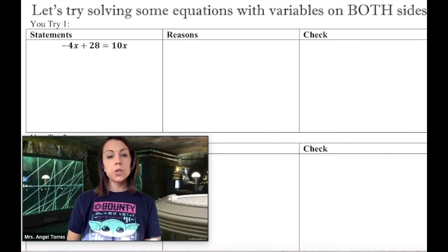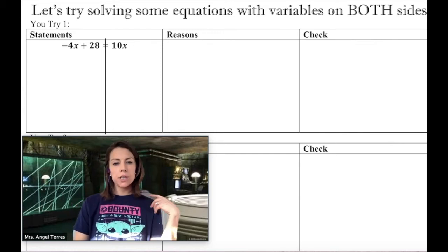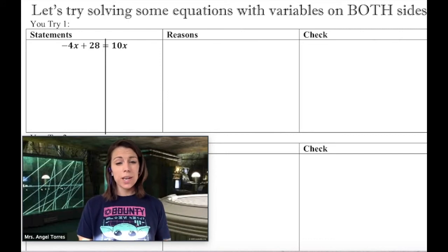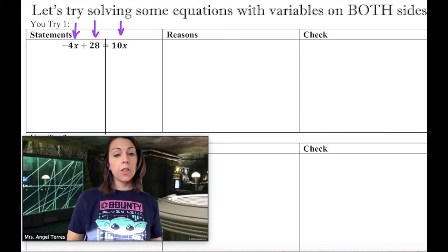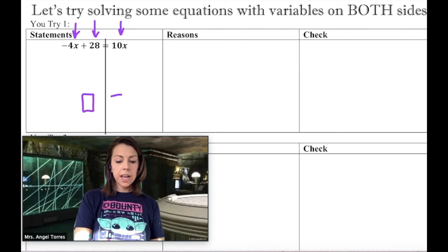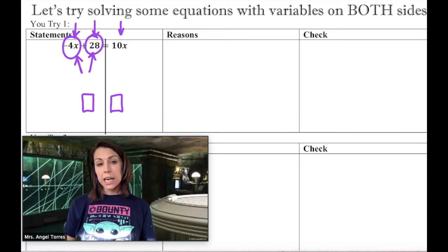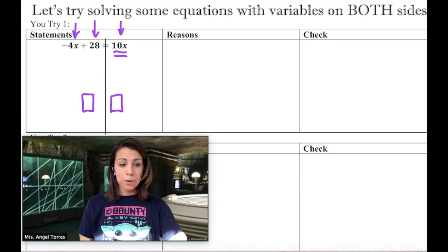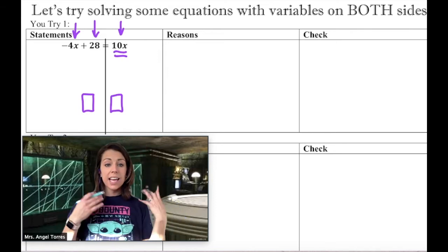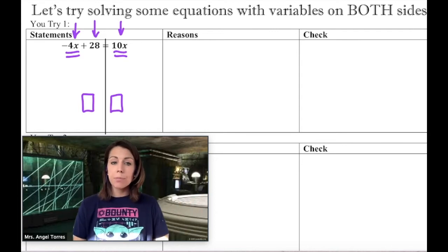You try number 1: negative 4x plus 28 equals 10x. I start with a line down the middle of my equal sign. I notice two terms on the left, one on the right. My goal is to get it down to a single term and a single term — so one of those two on the left has to go. Since 10x is a variable term, it can only be combined with other variable terms, which means I need to make a zero term out of the negative 4x.